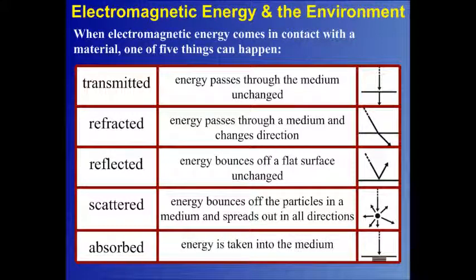When electromagnetic energy comes in contact with a material, one of five things can happen. The first thing is it can be transmitted, which is when it just passes through a medium unchanged. The second thing is it can be refracted, which is when the energy passes through a medium and it changes direction. This is due to the fact that it's going through a material that's a different density, and so the energy is slowed down and it bends.